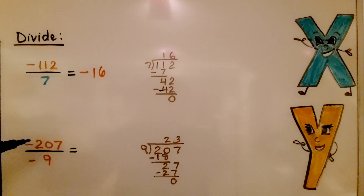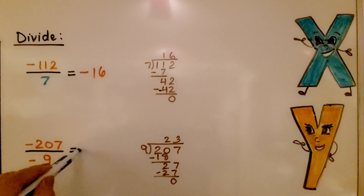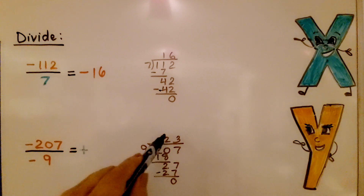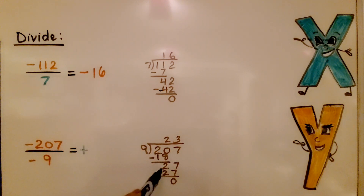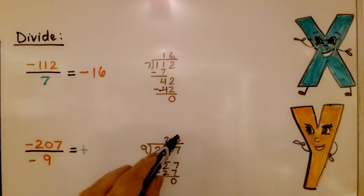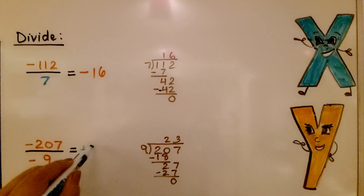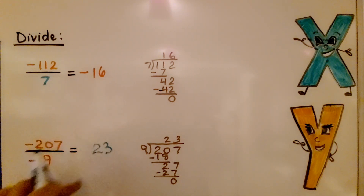Here we have negative two hundred seven divided by negative nine. They have like signs, so we know our quotient is going to be positive. We do two hundred seven divided by nine: nine fits into twenty two times, because nine times two is eighteen, subtract to get two, drop down the seven. Nine fits into twenty-seven three times. Subtract to get zero. We have a positive twenty-three — we just write twenty-three.